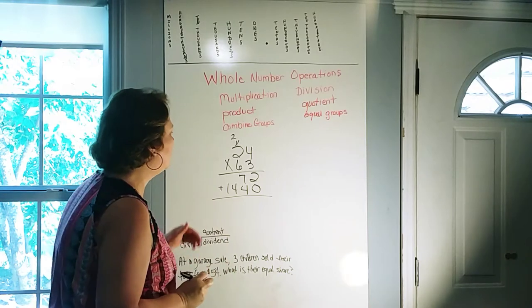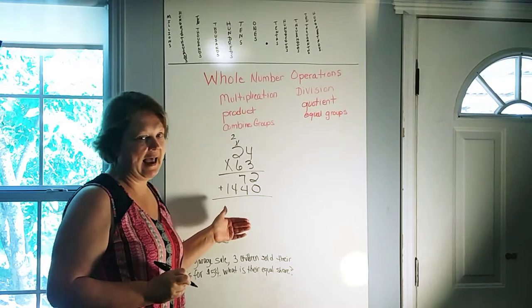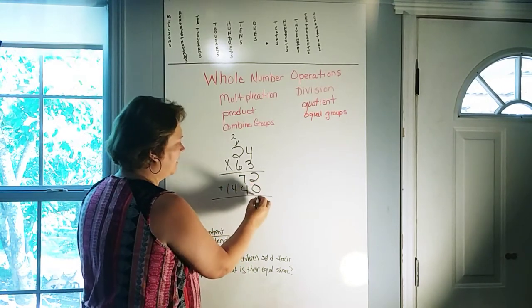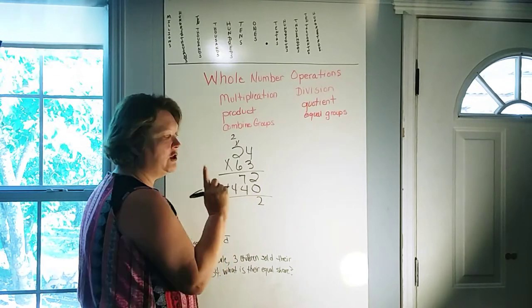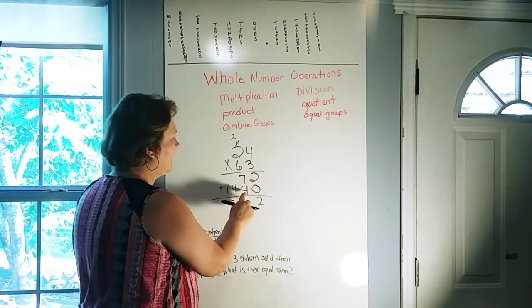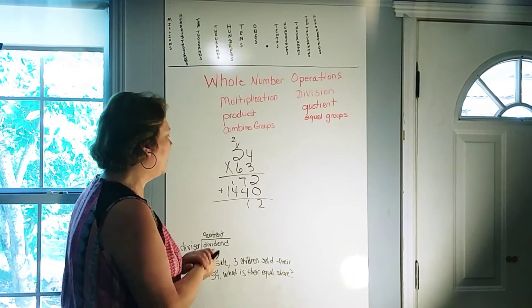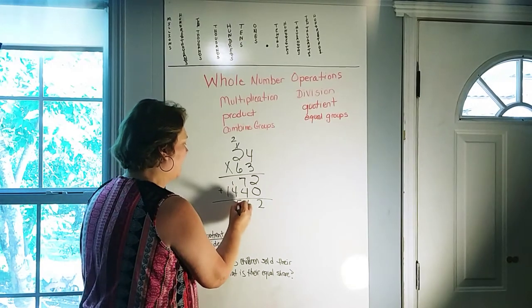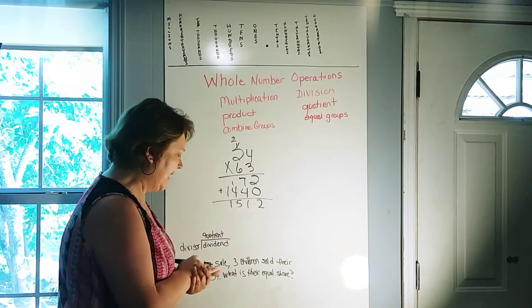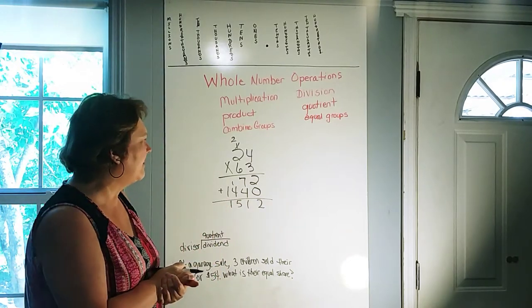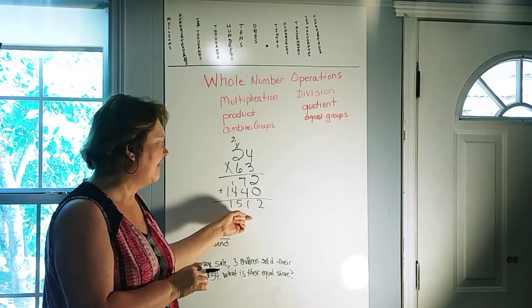And when we're multiplying anything down below the original multiplication problem, we're going to add. So now let's add 2 plus 0 is 2. 7 plus 4 would be 11. So we'll put our 1 down, carry the other 1. 1 plus 4 is 5. And then there's nothing to add the 1 to, so we'll just bring that down. And our answer is 1,512. So 24 times 63 is 1,512.